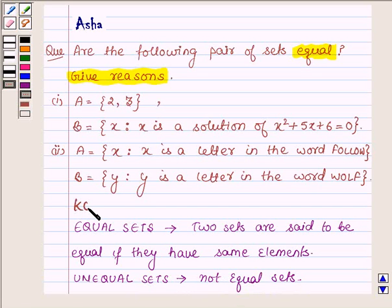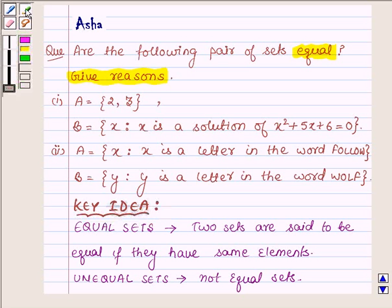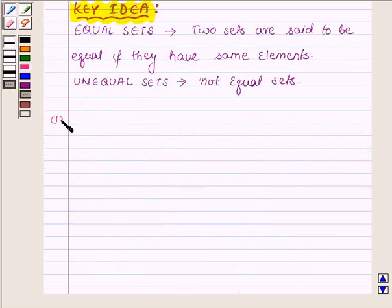So this is the key idea with which we will solve the above problem. Now start with the first part where A is the set containing elements 2 and 3.